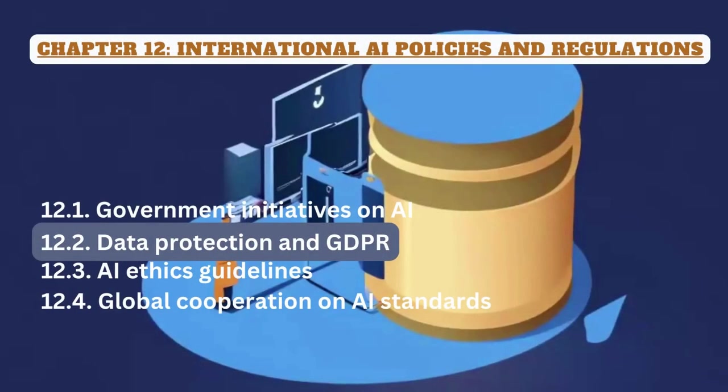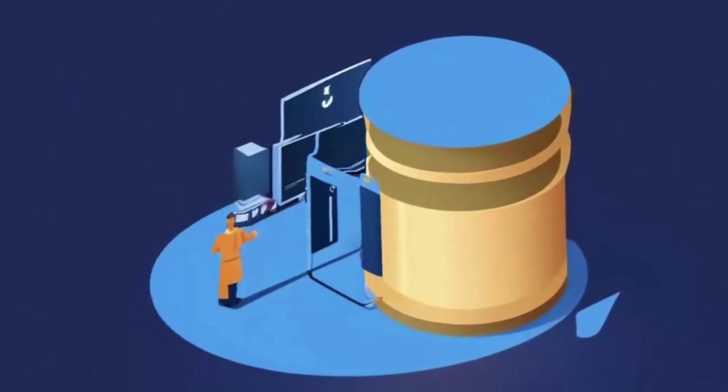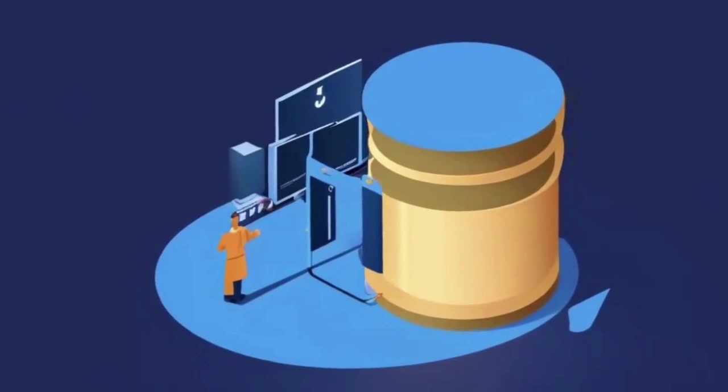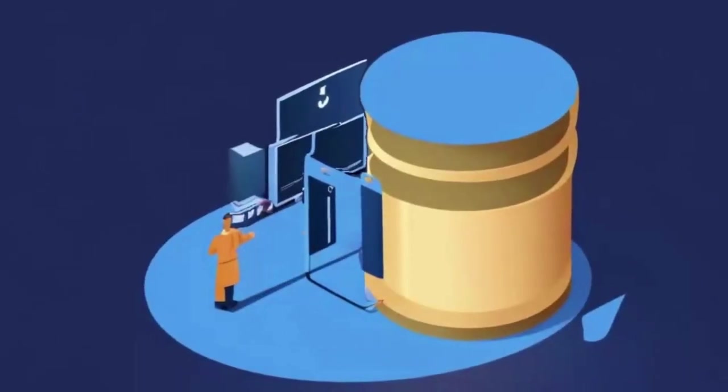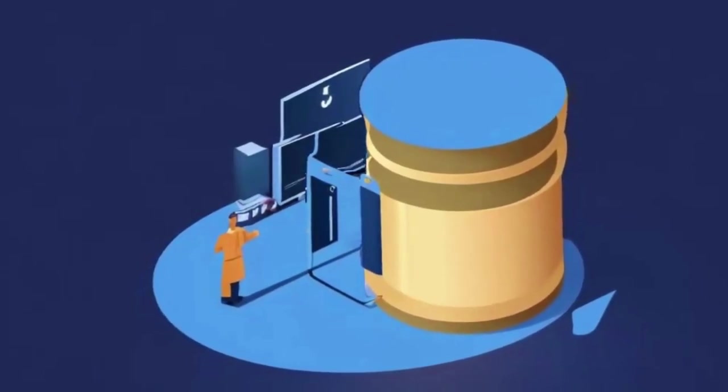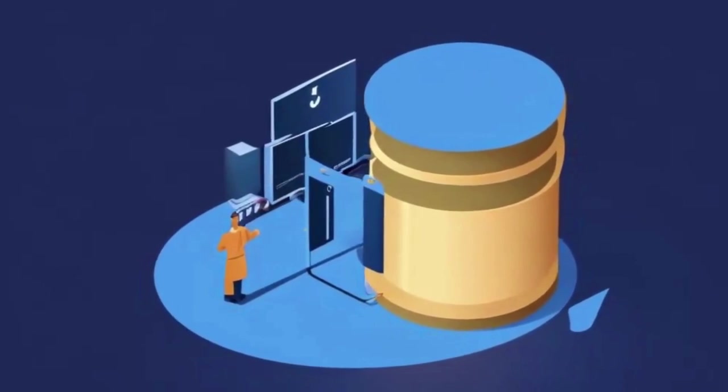Data Protection and GDPR: Data Protection and Privacy Regulations play a pivotal role in shaping AI policies worldwide. The General Data Protection Regulation (GDPR), enacted by the European Union, is a prime example of comprehensive data protection legislation with significant implications for AI.